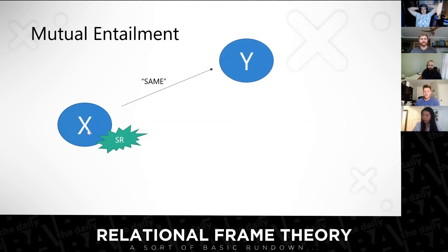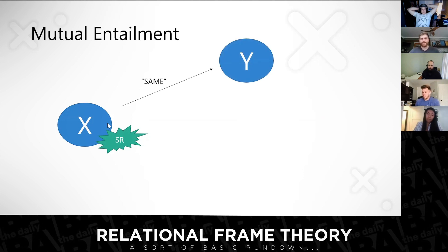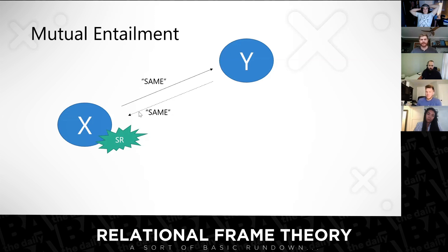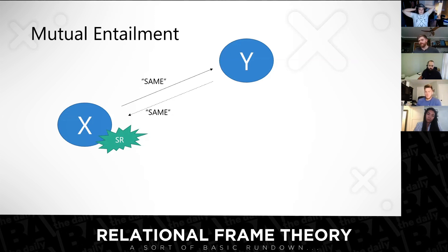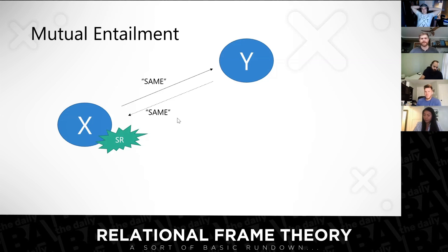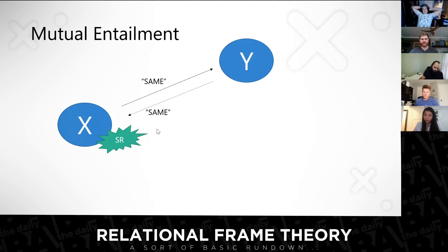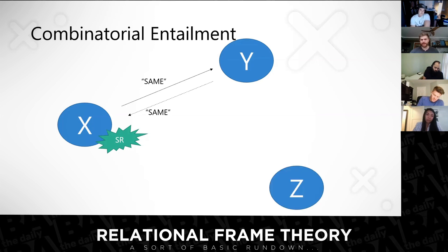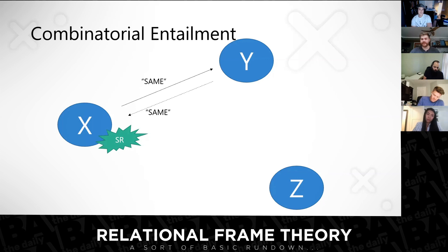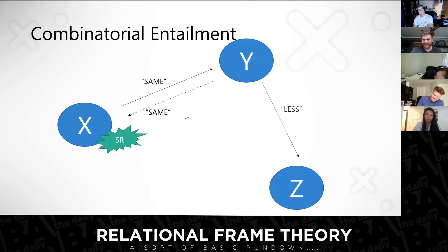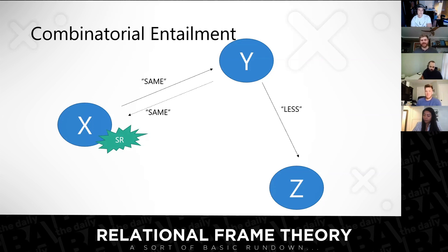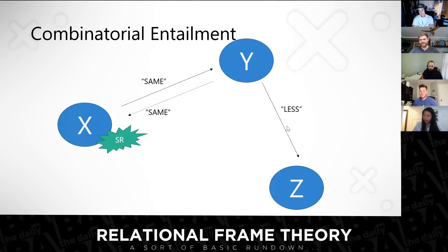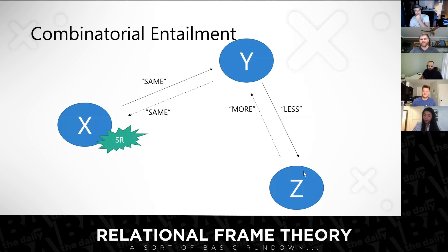If you're taught that X is the same as Y, you can directly train that. You will also derive — without any explicit instruction — that Y is the same as X. This is mutual entailment. For those familiar with stimulus equivalence theory, it's called symmetry. We can extend the complexity of this network by adding another member, Z. So Y is less than Z — not everything is equivalent — and therefore Z is more than Y. This isn't groundbreaking: of course if Y is less than Z, then Z is therefore more than Y.